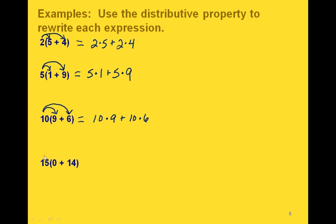And finally, here we're distributing the 15 to both the 0 and the 14. That gives us 15 times 0 plus 15 times 14.